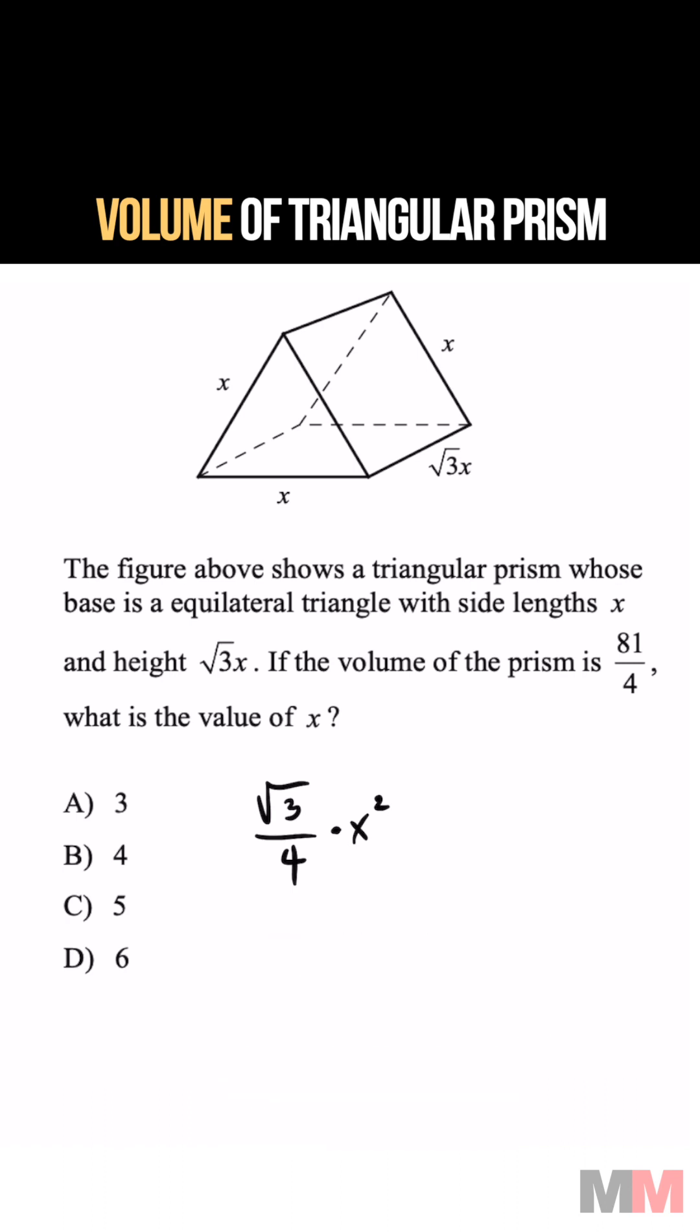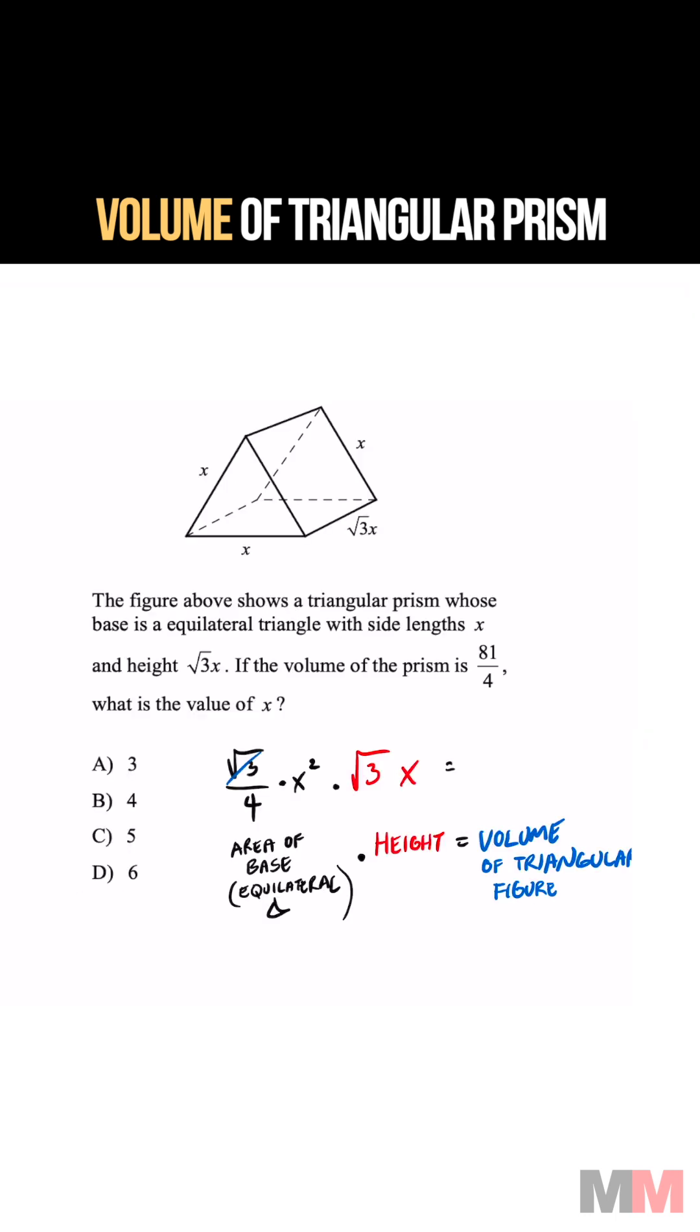Now we're going to multiply that to the height of the figure, and that will represent the volume of this triangular figure. We might as well simplify as we go. Root 3 times root 3 equals 3, x squared times x is x cubed, and all of it will be over 4 in the denominator.